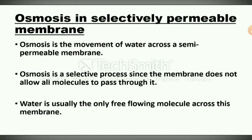Osmosis is the movement of water across a semi-permeable membrane and it is a selective process, since the membrane does not allow all molecules to pass through it. Water is usually the only freely flowing molecule across this membrane. The semi-permeable membrane allows free movement of water only.